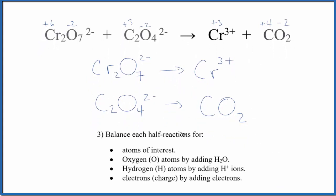To balance the half reactions, first we balance the atoms of interest. We have two chromiums here, so let's put a two here. We have two carbons and one here. That balances the atoms.